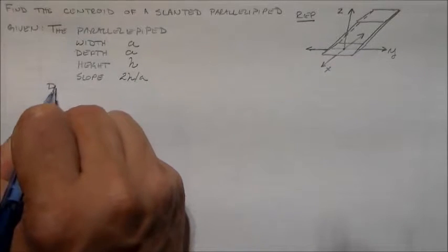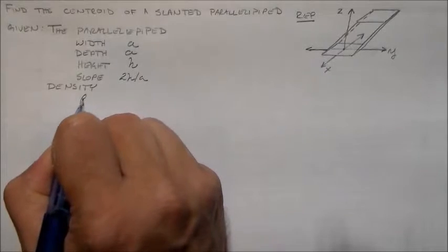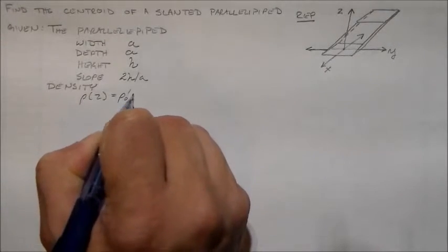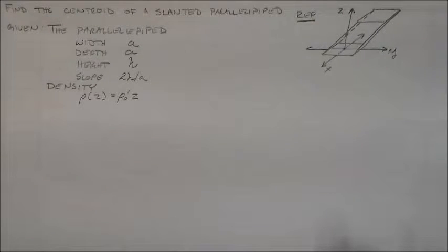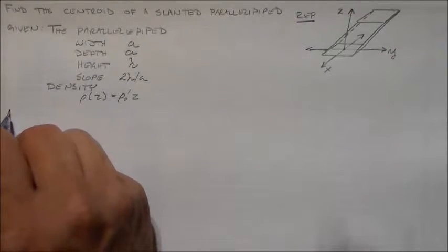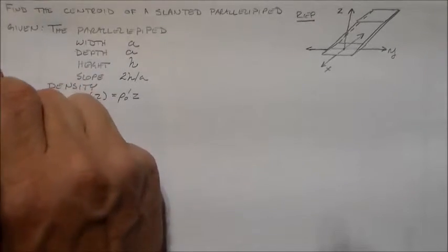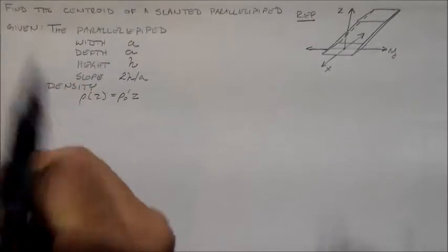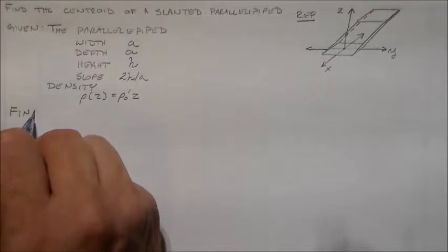This shape is also going to have a density function. I forgot about the density function — it's rho(z) equals rho-naught-prime times z. That's more important for the next video, which will be finding the center of mass instead of the centroid. For the centroid I just ignore that and do everything as if rho was uniform instead of changing.